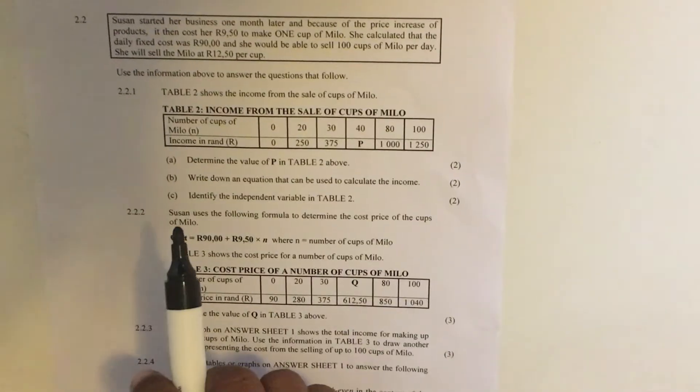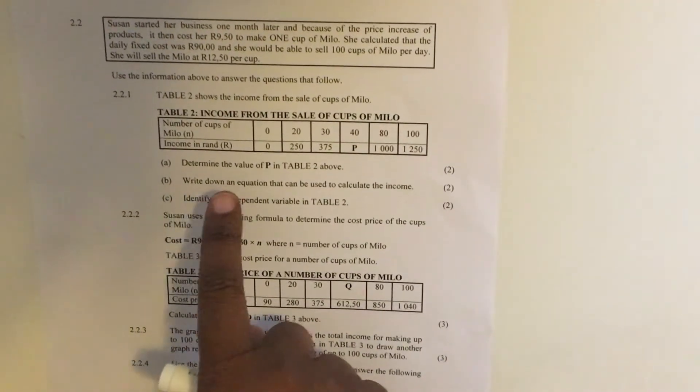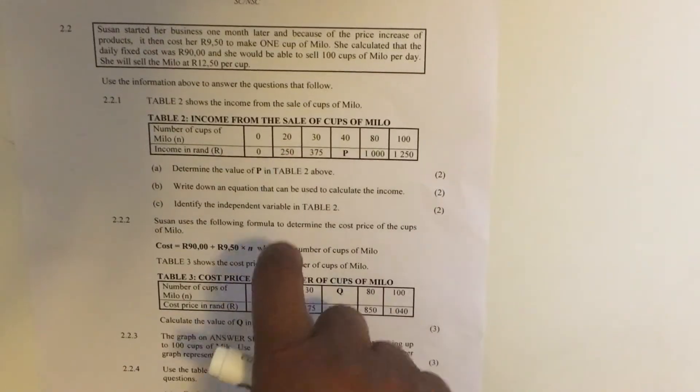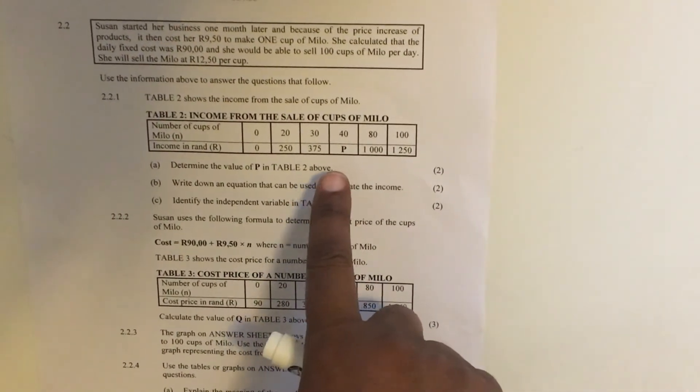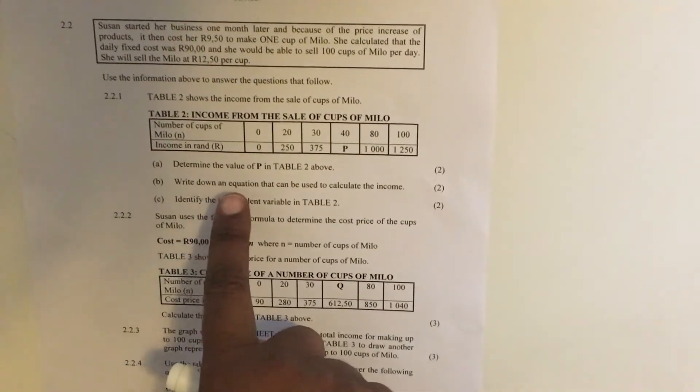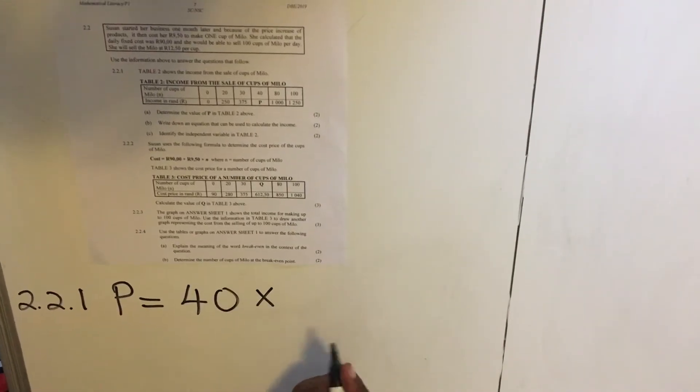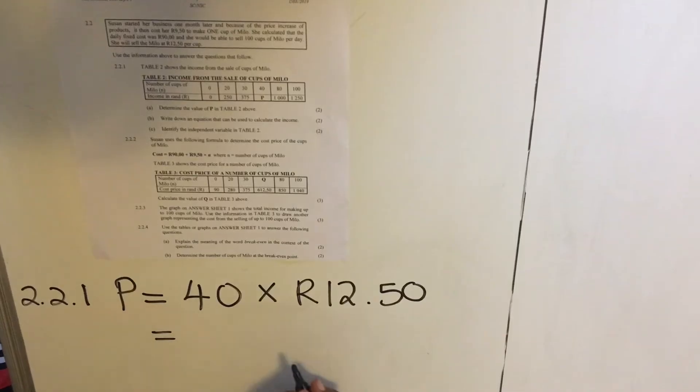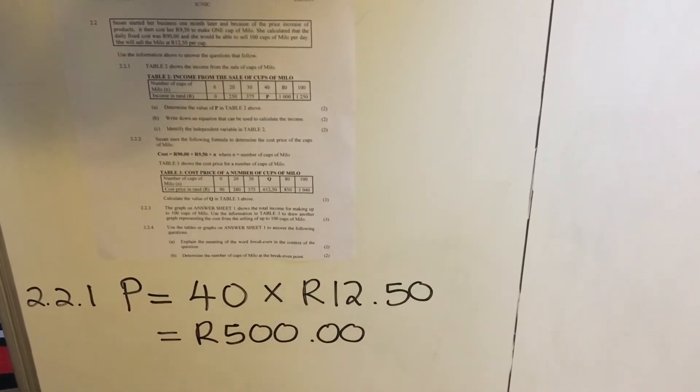Now we're going to use the information above to answer the questions that follow. Question 2.2.1. Table 2 shows the income of the sales of cups of Milo. So in this table, they have given us cups of Milo in the first row and then income in rands. So if she sells 0 cups, she makes 0 rands. If she sells 20 cups, she makes 25 rands and so it goes on. So they are asking you, if she sells 40 cups, how much income will she make? That's the first question. That's your A. Determine the value of P in the table above. Let's do that. 2.2.1. Our P is equal to 40 cups of Milo multiplied by, you remember from our information, she was selling R12.50 per cup. So if you multiply that, you will get that it's R500. So she would make R500 for 40 cups of Milo. That's our first question.